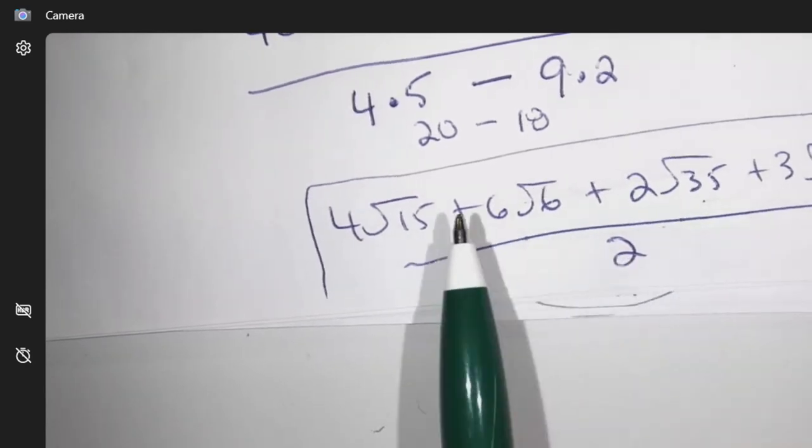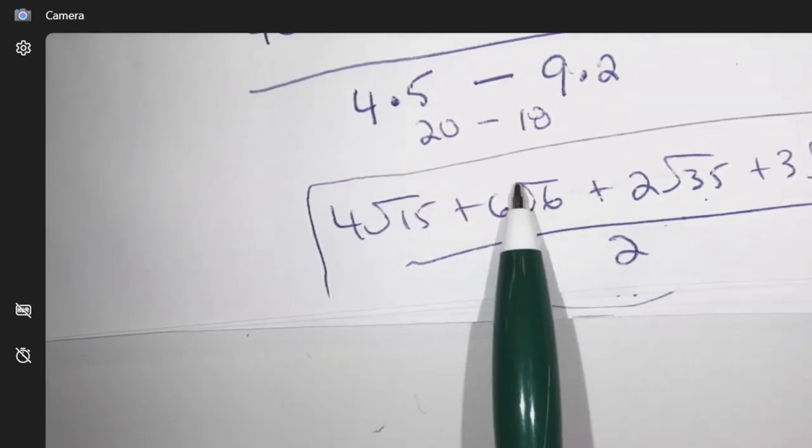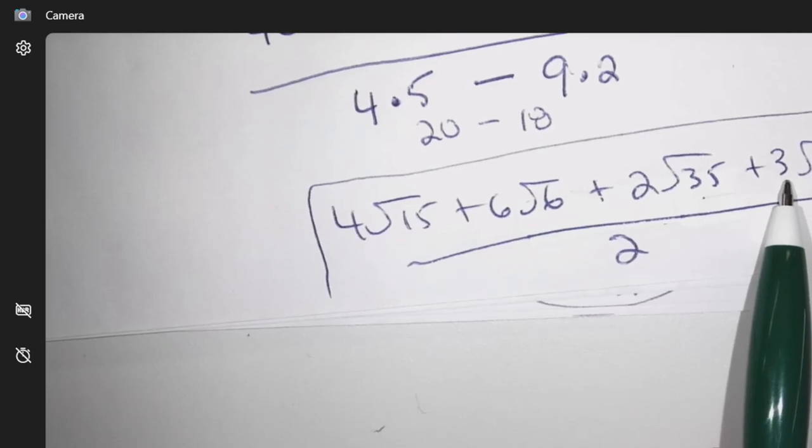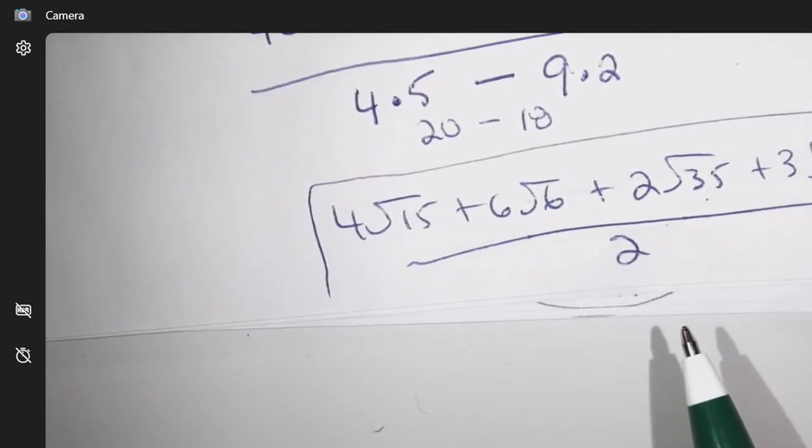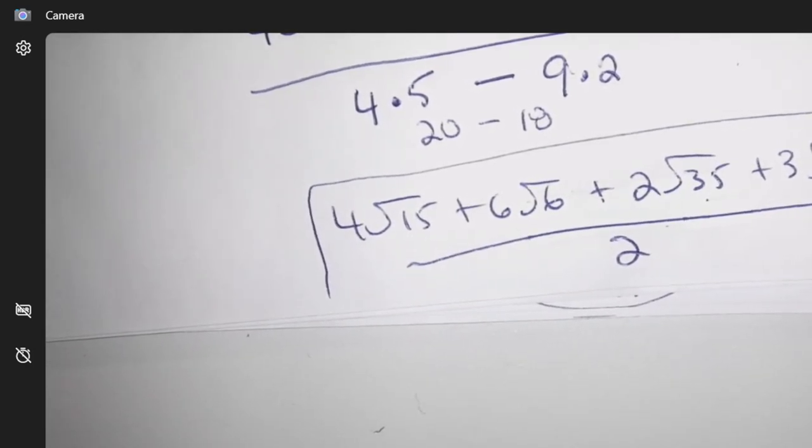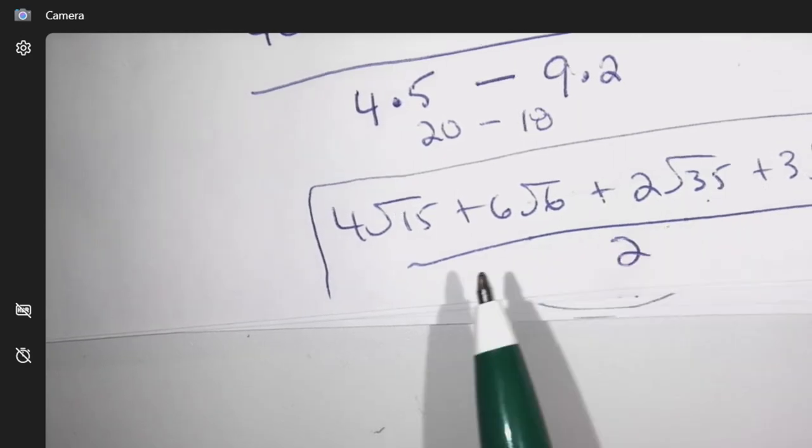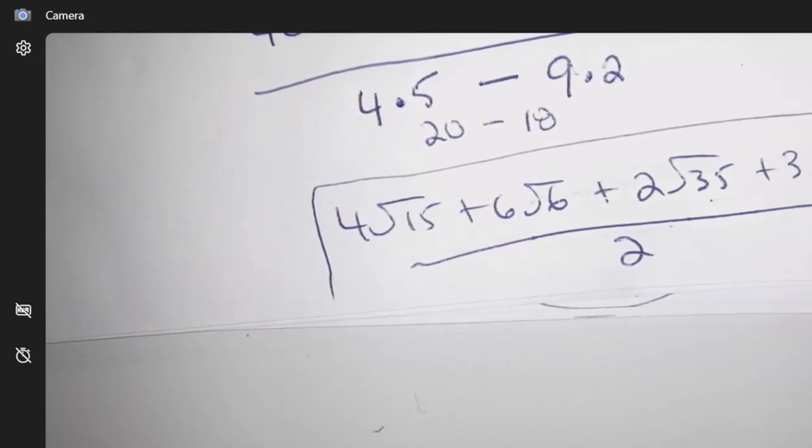And I would simplify if this all divided by 2, but then this one would have 3 divided by 2, which is a fraction anyway, so I guess I can just leave it. But if all these front numbers would have divided by 2, I would have simplified it more.